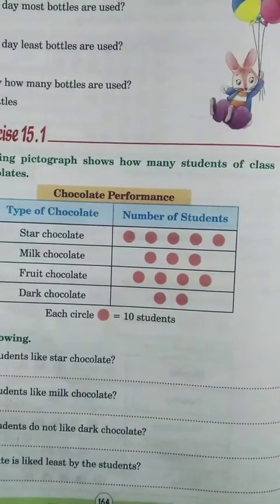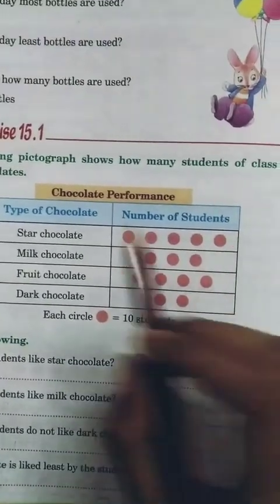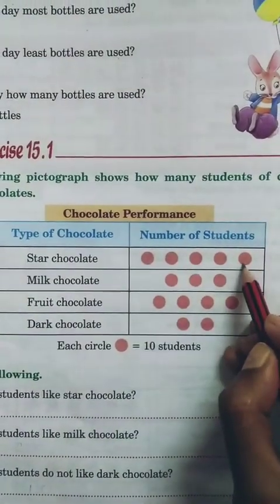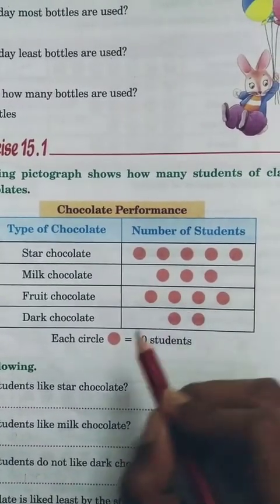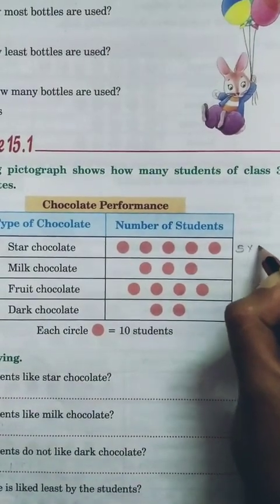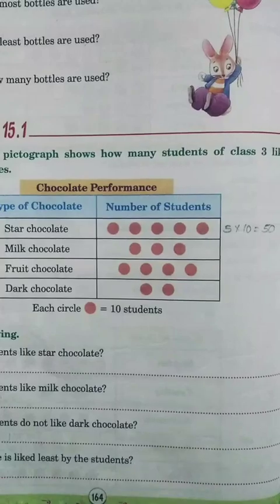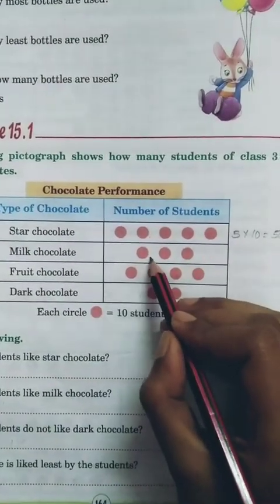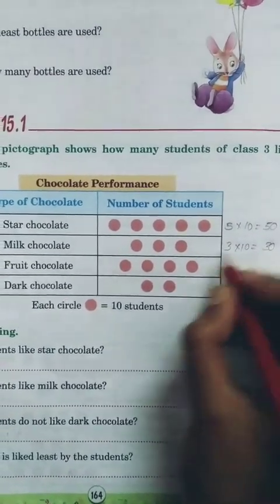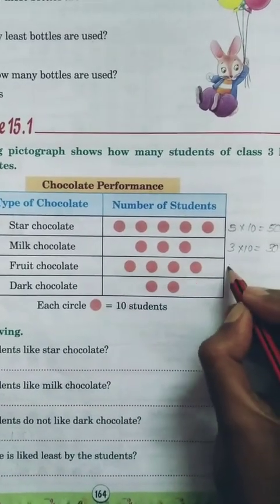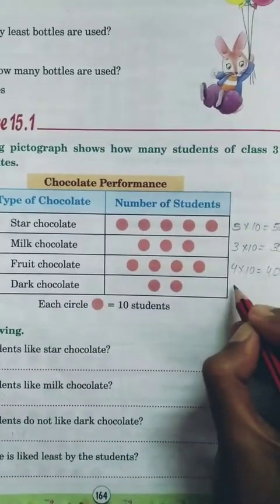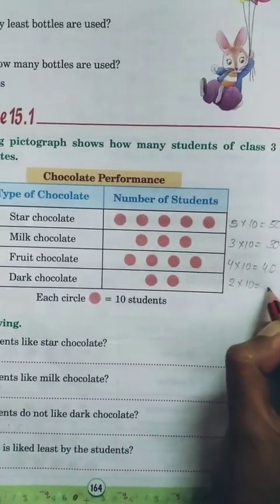Let's find the number of students who like each chocolate. Star chocolate has five circles: five times ten equals fifty. Milk chocolate has three circles: three times ten equals thirty. Fruit chocolate has four circles: four times ten equals forty. Dark chocolate has two circles: two times ten equals twenty.